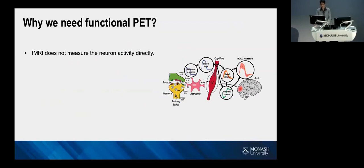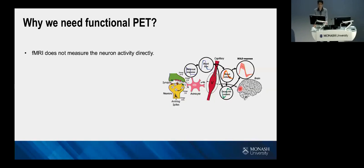Why do we need functional PET? Because fMRI does not measure neural activity directly. The neural activity is projected onto the blood flow signal, then to the ratio change between two different hemoglobins, and then to the magnetic field change — so we get the signal through several steps of processing. There is some uncertainty during this procedure because the physiological meaning of both signals is not very clear, making interpretation very hard.